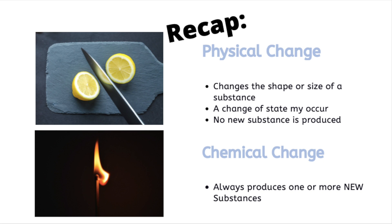To recap: a physical change changes the shape or size of a substance, a change of state may occur, and no new substance is produced. A chemical change always produces one or more new substances.